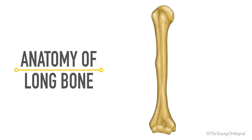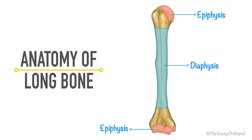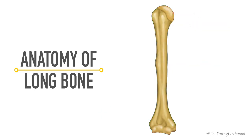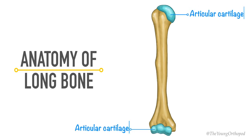A long bone is divided into three parts. The elongated tubular central part is called the diaphysis. The enlarged area at the ends is called the epiphysis. The intermediate segment connecting the diaphysis and the epiphysis is called the metaphysis. The articular ends of the epiphysis, or joint surface, are covered with articular cartilage.